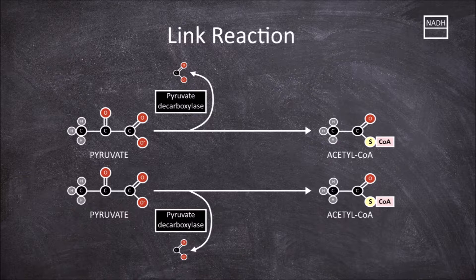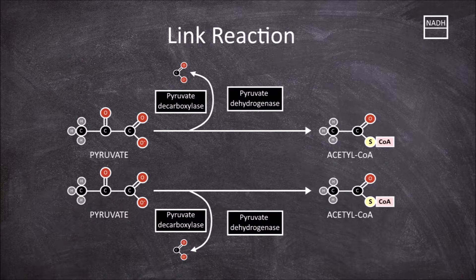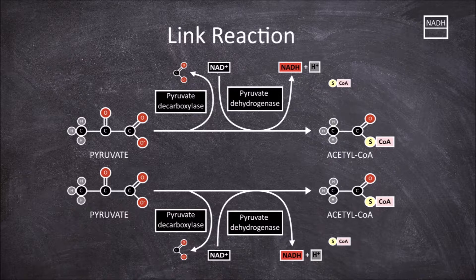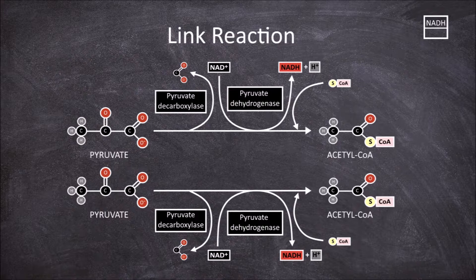The enzyme pyruvate dehydrogenase reduces NAD+ into NADH plus hydrogen. Coenzyme A also binds to the molecule, creating acetyl-CoA.